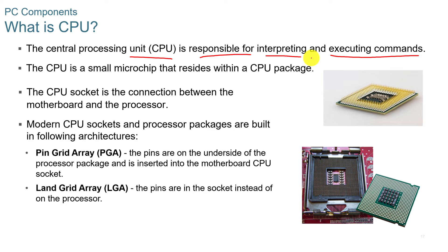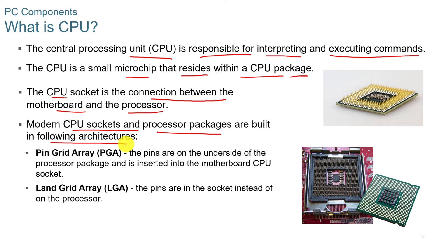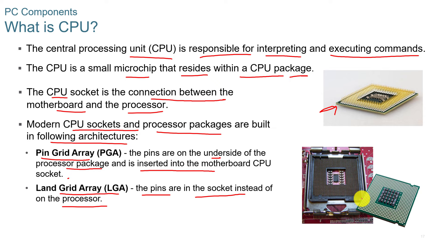The CPU is responsible for interpreting and executing commands — it's the thinking part of the computer. It's a small microchip residing within a CPU package, and the CPU socket is the connection between the motherboard and the processor. Modern CPU sockets are built in two architectures: PGA or pin grid array, where the pins are on the underside of the processor and inserted into the motherboard socket — be very careful not to bend those pins — and LGA or land grid array, where the pins are in the socket instead of the processor, and the processor lays in and locks down with a handle.